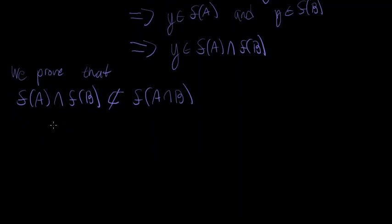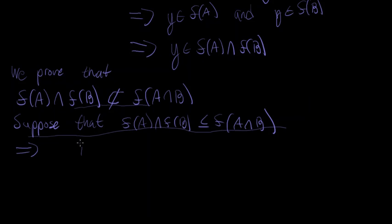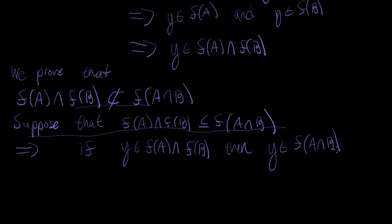To do that, we're going to do a good old proof by contradiction. We're going to suppose that F of A intersect F of B is a subset of F of A intersect B. If we suppose this and are able to arrive at a contradiction, then we've shown that this statement can't possibly be true. So suppose this is true — then that implies that if Y is in F of A intersect F of B, then Y is also in F of A intersect B. Let's think about what it means for Y to be in F of A intersect F of B.